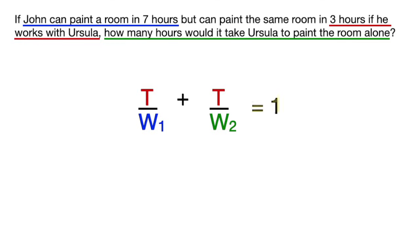And again, it's equal to 1 because they are only painting one room. And just like before, we'll plug in 7 for w1, but this time we'll plug in 3 for both t's on the top and solve for w2.